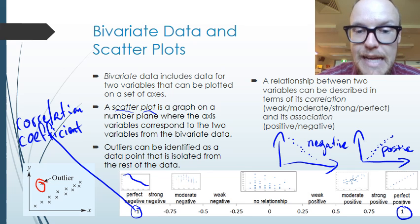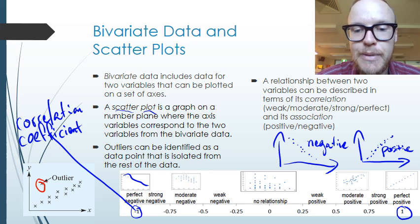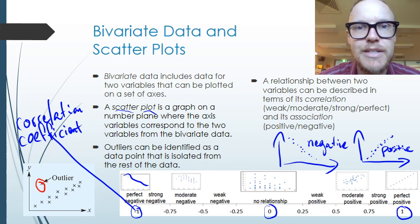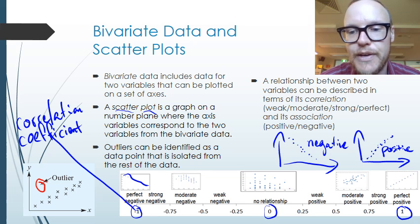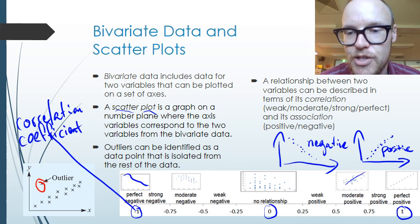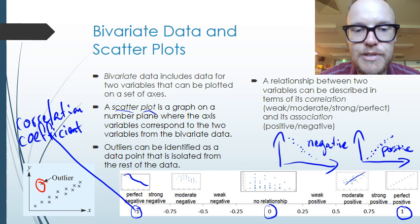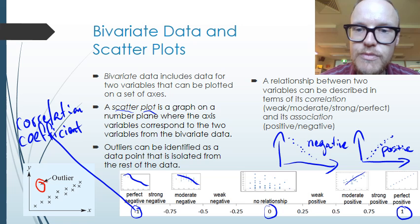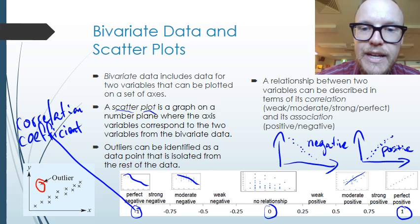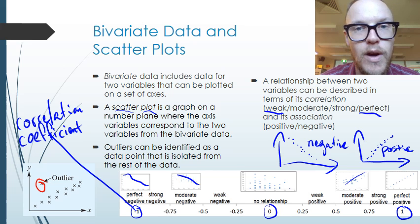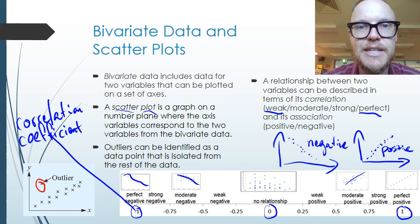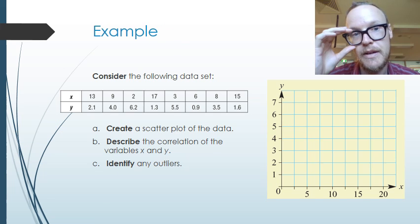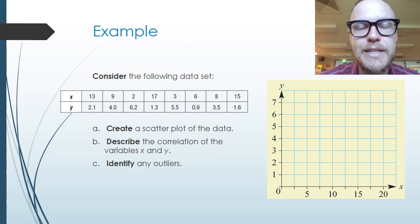A correlation coefficient of zero means there's no relationship — the data is neither increasing nor decreasing, and looks very muddily spread out. In between, we have a moderate positive correlation where there's a general upward trend but the data is still spread out, and a moderate negative trend where the data is generally decreasing but still quite spread out. So we're looking at a scale from weak all the way through to perfect, and whether it's positive or negative.